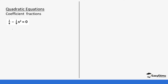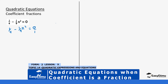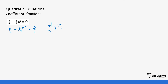So for this equation — for example, 1/4 minus (1/9)x² equals zero — the LCM of 4 and 9 is 4 times 9, which is 36. So the LCM is 36. This means you need to go back to your concepts for LCM from Form 1 and be able to practice that before you continue.